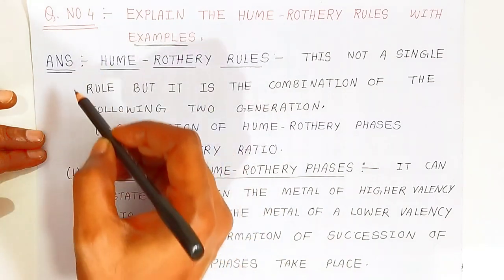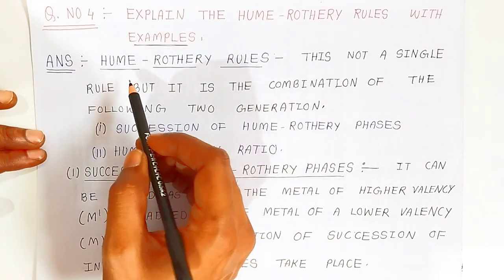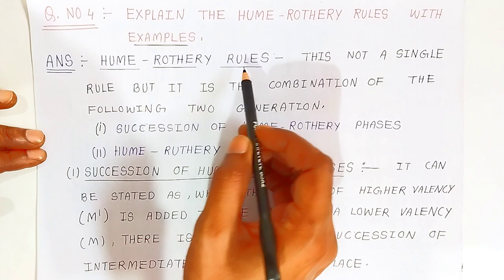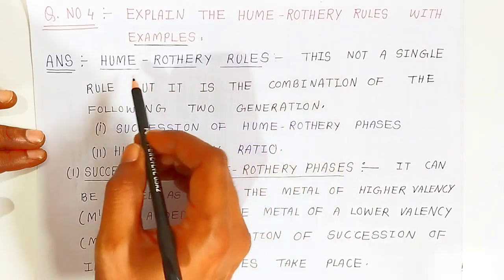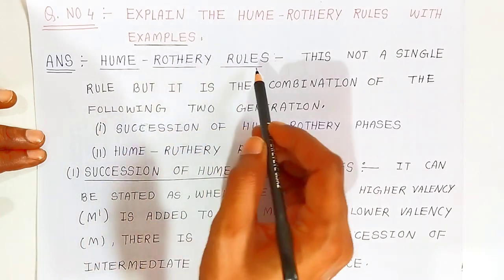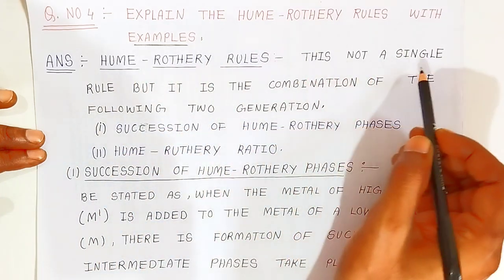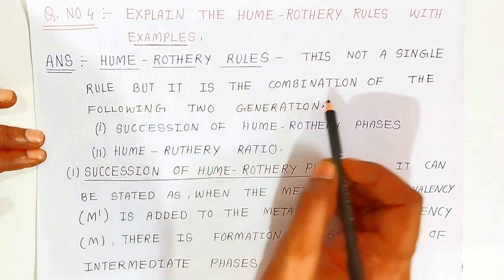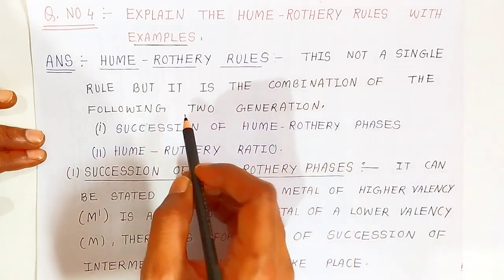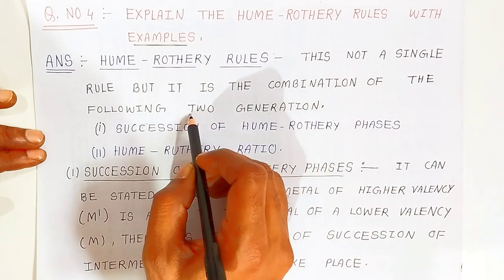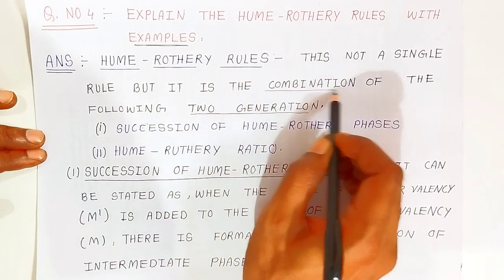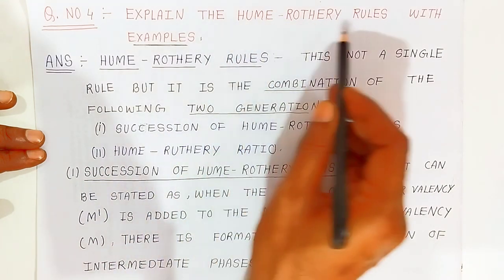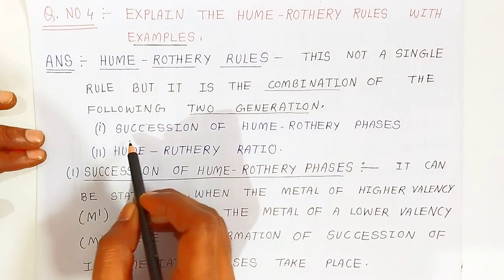This is how you have to represent the answer. First, you have to write Hume-Rothery rules. What are Hume-Rothery rules? This is not a single rule, but it is the combination of two rules. It is called Hume-Rothery rules.